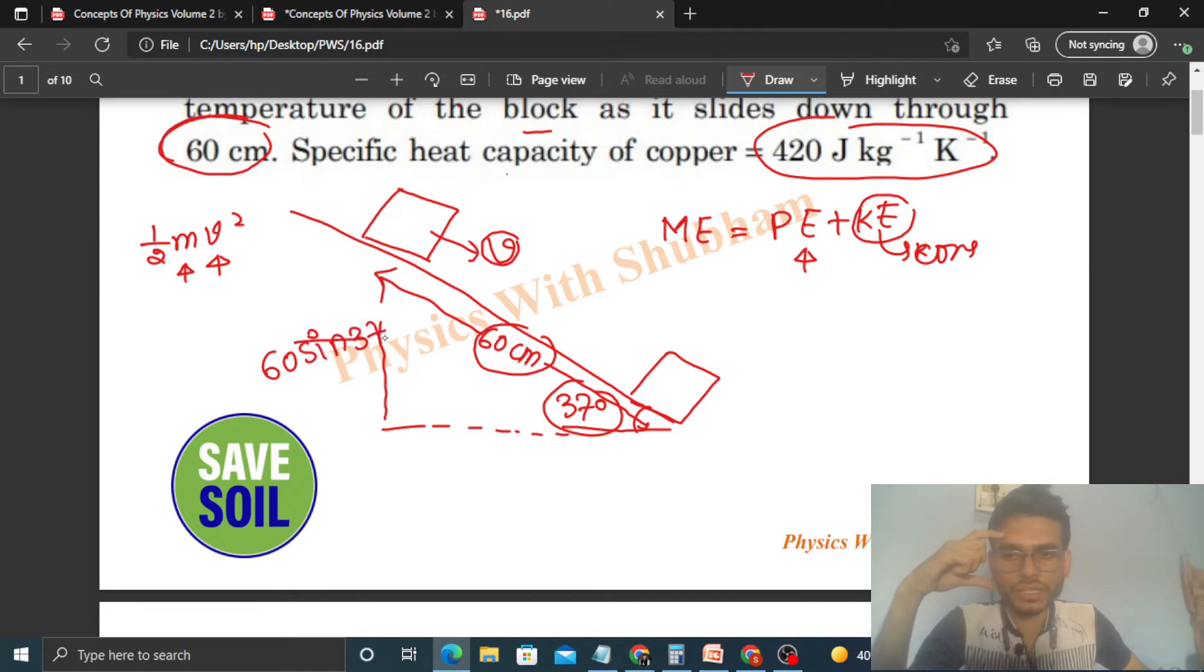Sin 37, that is 3 by 5, so 12 times 3, that is 36 centimeters. So the height decrease is 36 cm, or you can say 0.36 m.